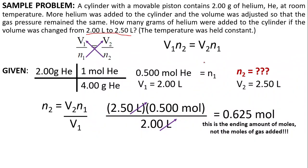So, how do we get the moles of gas added? So, you have to subtract 0.5 moles. Okay, why? Because it's the initial amount of gas. So, this will give us 0.125 moles of helium.